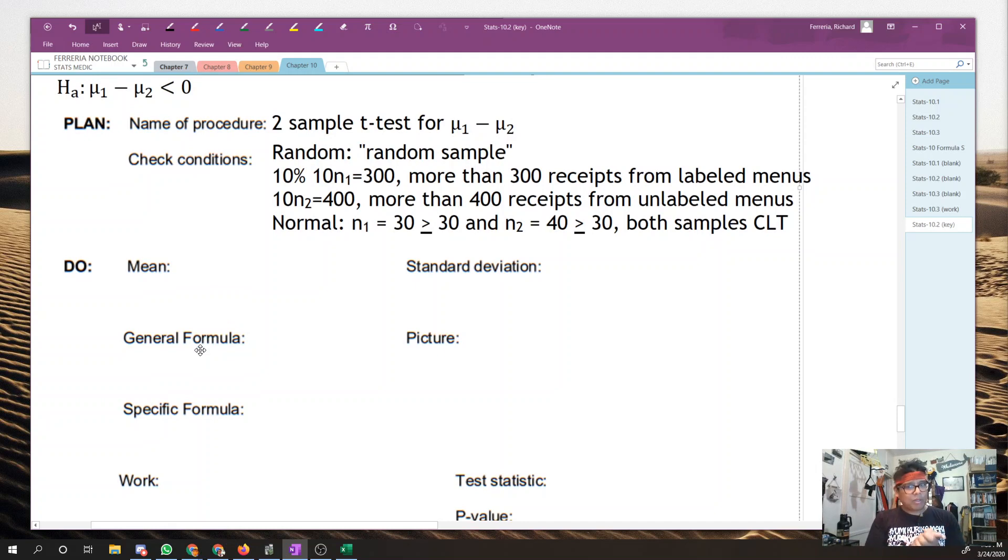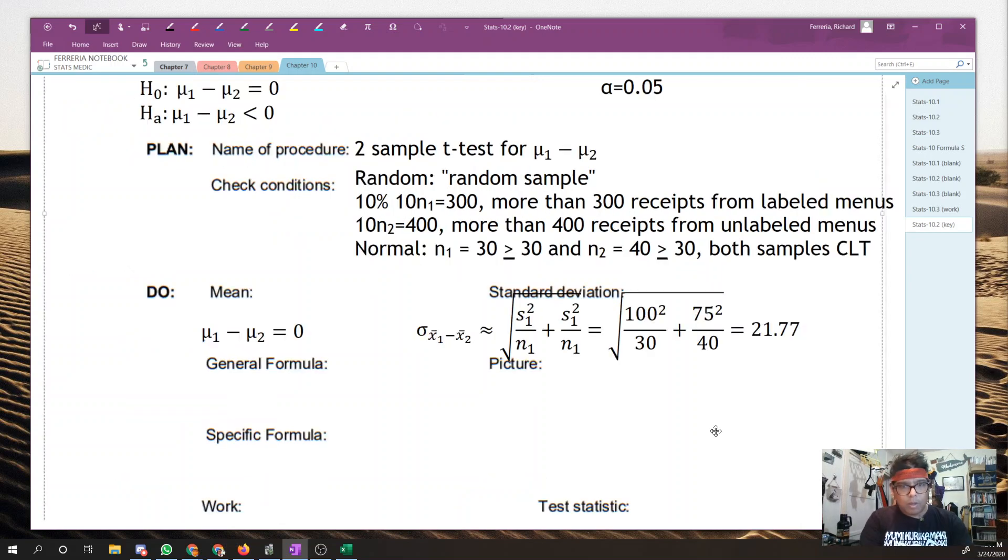The next part here is the do part. Let's get the mean and the standard deviation. Let's get numbers for those formulas and numbers. And we'll go ahead and calculate that. Go ahead and do that right now. Mu1 minus mu2 is equal to zero. Remember that that comes from H0.